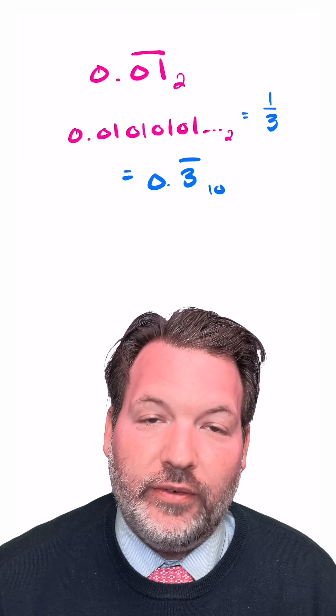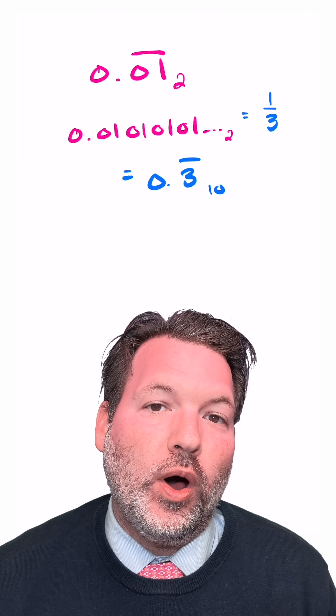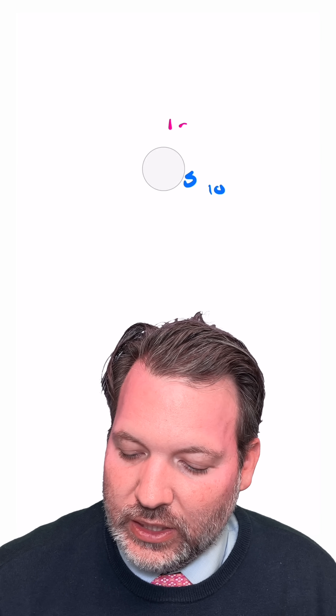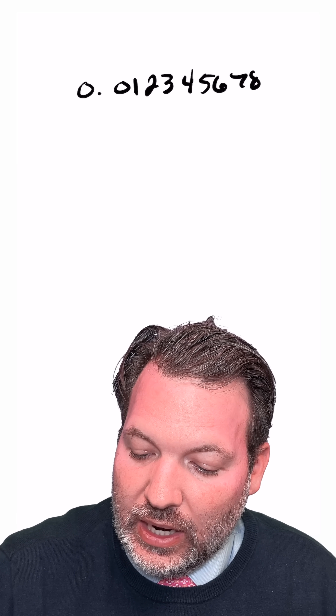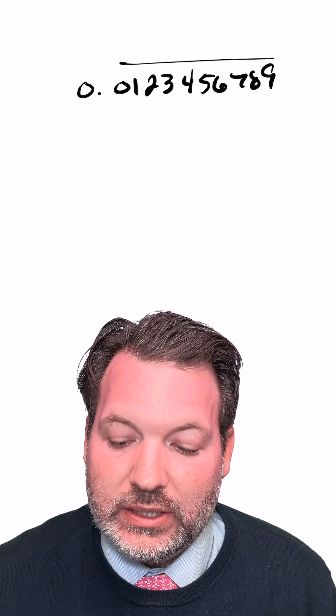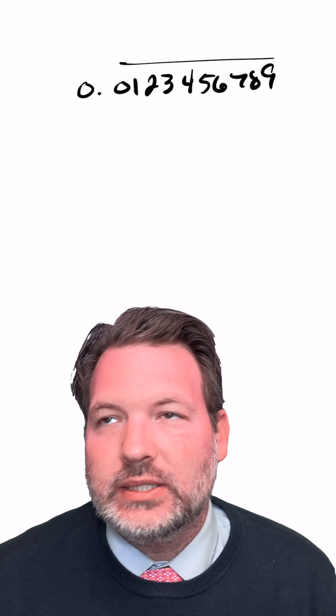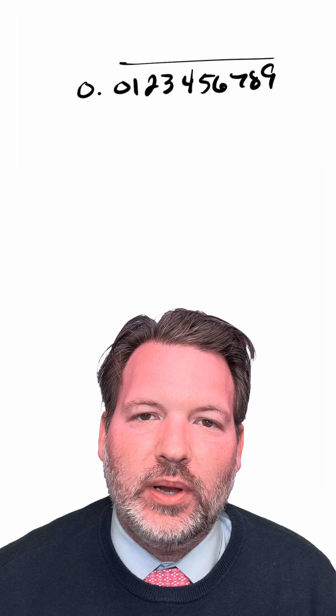No other digit than 3 will ever occur in that decimal representation of 1/3. It's relatively easy to construct numbers that we know to be normal in a particular base. For example, I can easily make the repeating decimal 0.0123456789, and this is a normal number in base 10 because it uses each of the digits of base 10 exactly the same number of times.